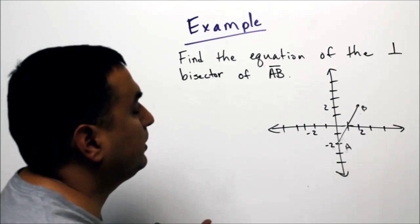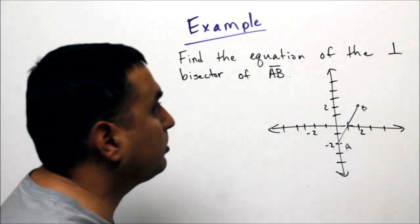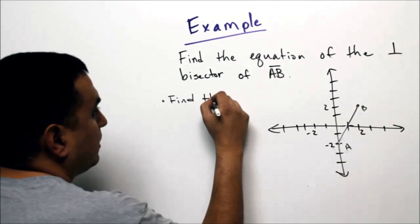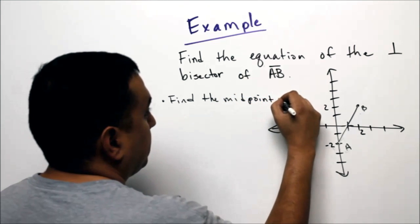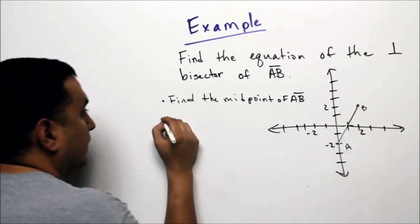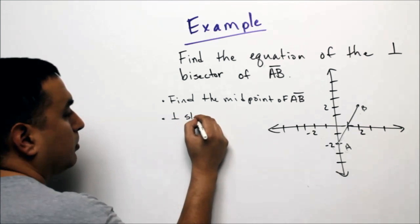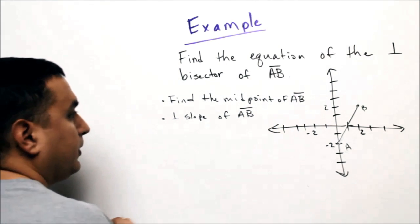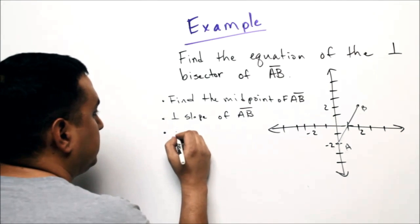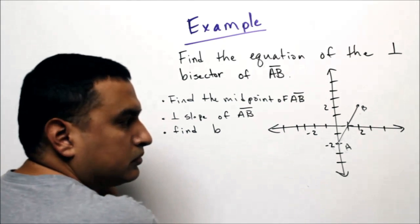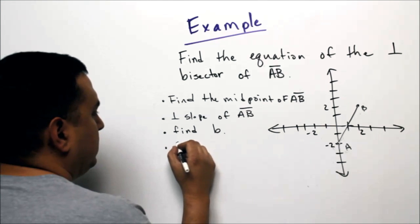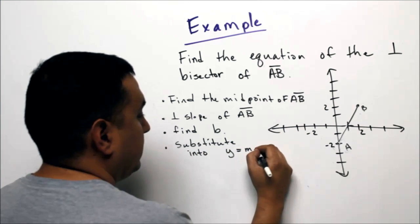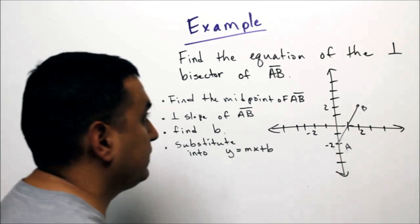Now we need to find the equation of the perpendicular bisector of segment AB. There are a few steps: first, find the midpoint of segment AB; then find the perpendicular slope; then find the y-intercept; and finally substitute into y = mx + b to get the perpendicular bisector equation.